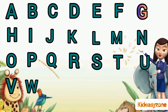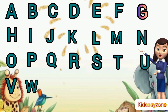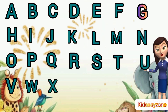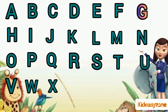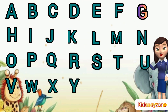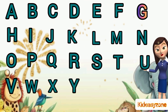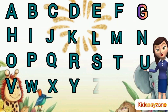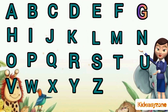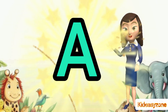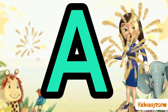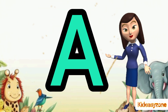W is for watch. X is for X mystery. Y is for yuck. Z is for zebra. A for apple.